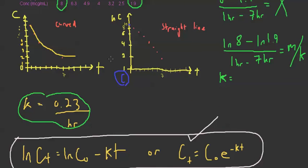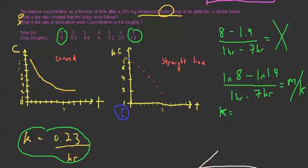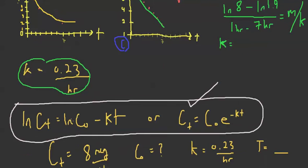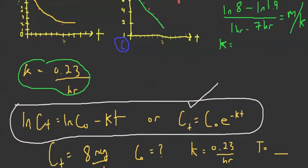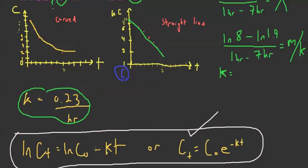We aren't given the starting concentration at time zero — the first given value is at 1 hour. What's the concentration when time equals zero? It looks like about 10, but we need to prove it. We use the equation CT = C0 · e^(−KT), or equivalently ln(CT) = ln(C0) − KT.